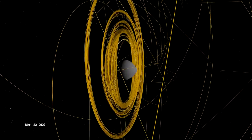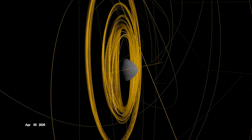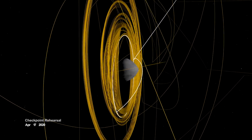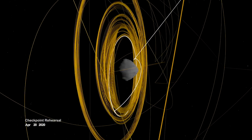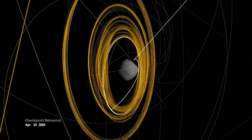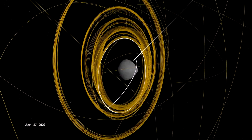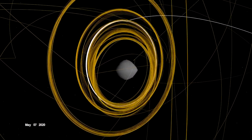In mid-April, OSIRIS-REx performed the first of two rehearsals prior to sample collection. It navigated to a predetermined checkpoint about 125 meters above Bennu, then descended to within 65 meters before backing away.